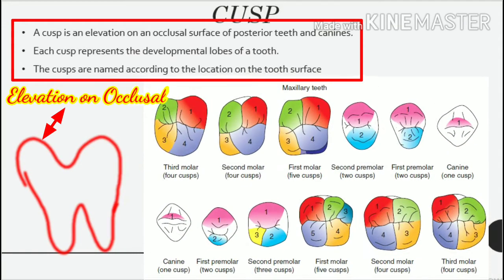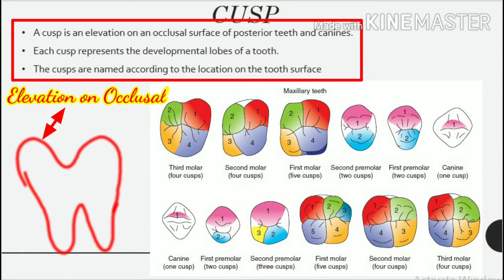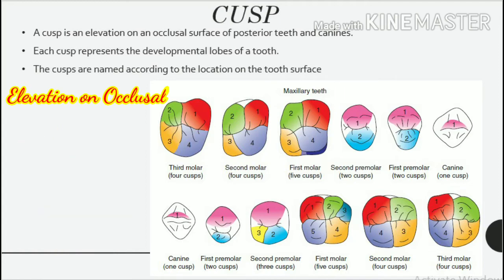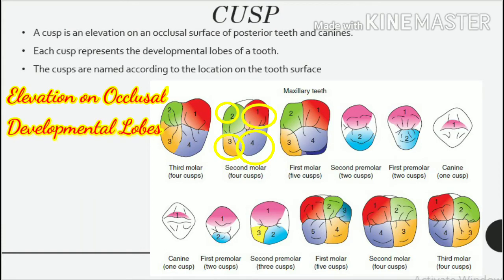Cusp. A cusp is an elevation on an occlusal surface of posterior teeth and canines. It is present on the occlusal surface of molar and premolar teeth and on the incisal edges of canines. Each cusp represents the developmental lobes of a tooth, and the cusps are named according to their location on the tooth surface.